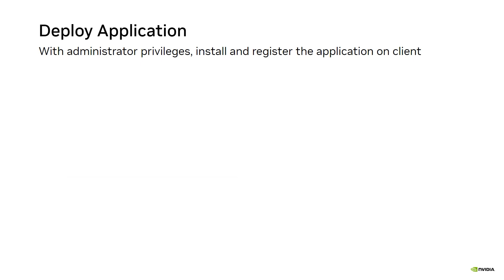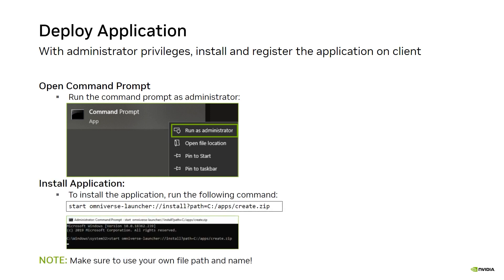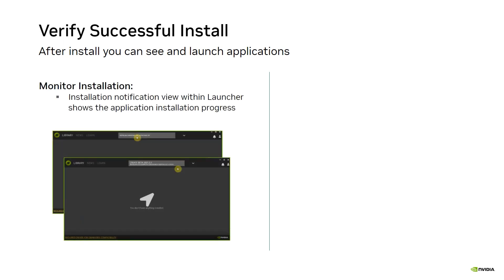In this example, use the Windows command prompt. First, open the command prompt as an administrator. To install the application, run the command in the second block, making sure to adjust the path and file name to match your environment. The command starts the installation of the package. Monitor the installation progress via the status bar at the top of the Enterprise Launcher. When the installation is completed, the package will appear in the library and you'll receive a notification at the top right-hand side of the screen indicating that the package has been installed.